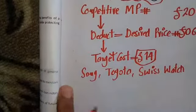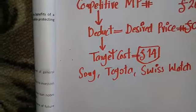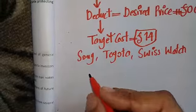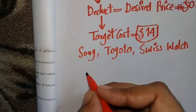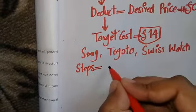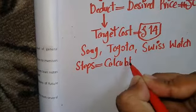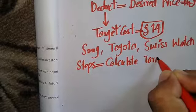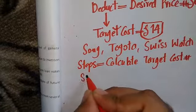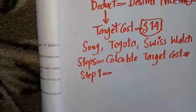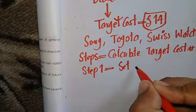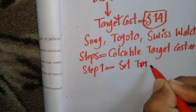This is some information about target costing. Now, what are the main steps we will use to calculate the target cost? Step one is: we will set the target selling price from the market, from the competitors.